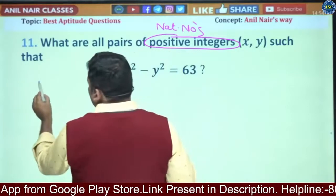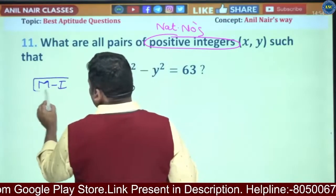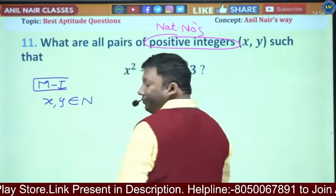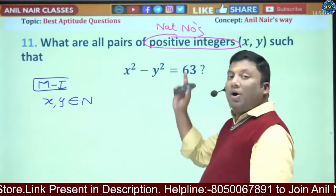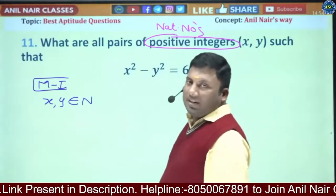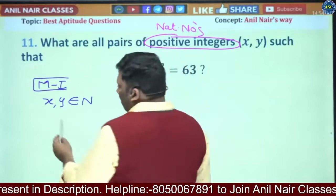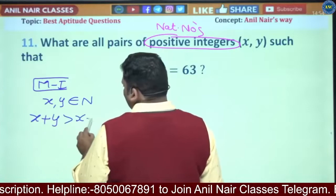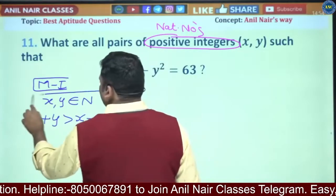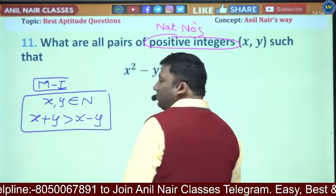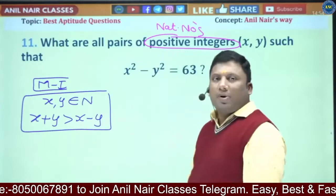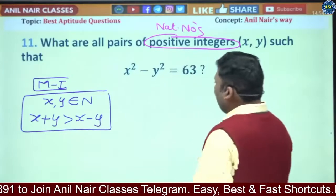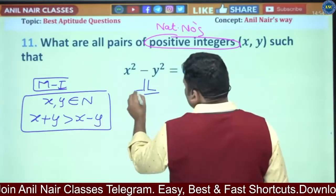Method 1 is the traditional method. x and y are natural numbers, meaning positive integers. A very important property: the sum of two natural numbers is always greater than their difference. This will help us reduce the number of steps.